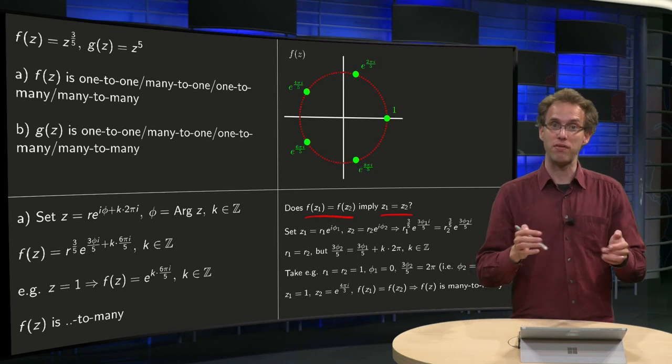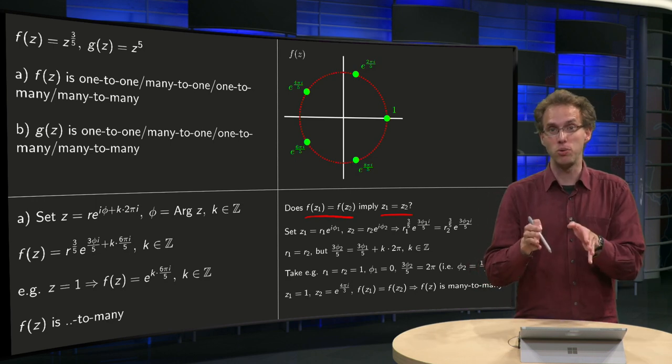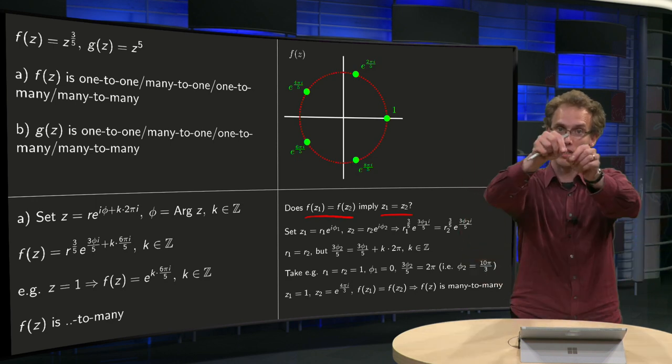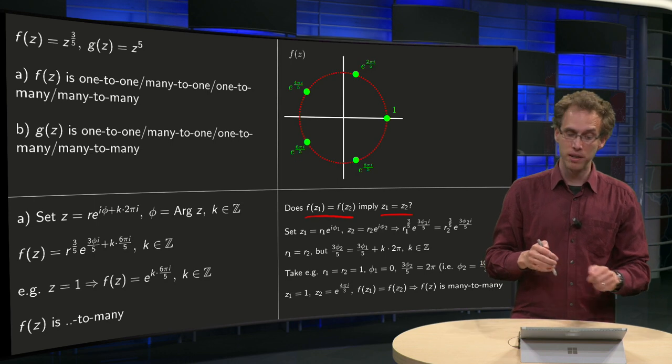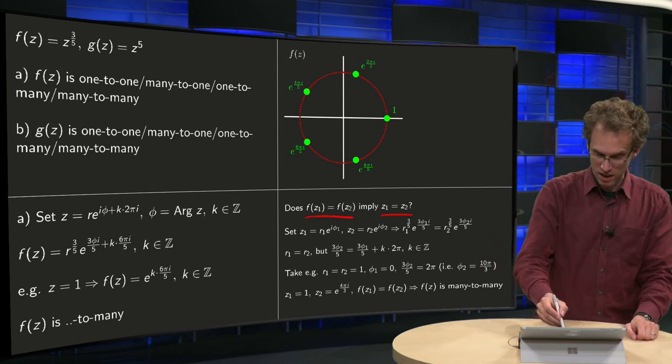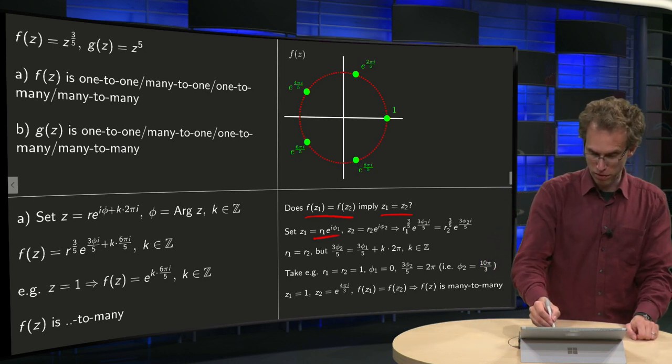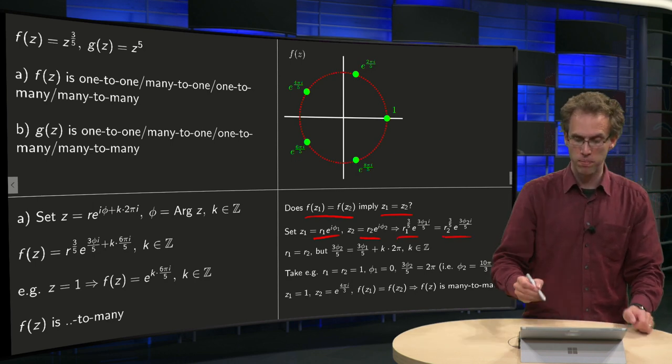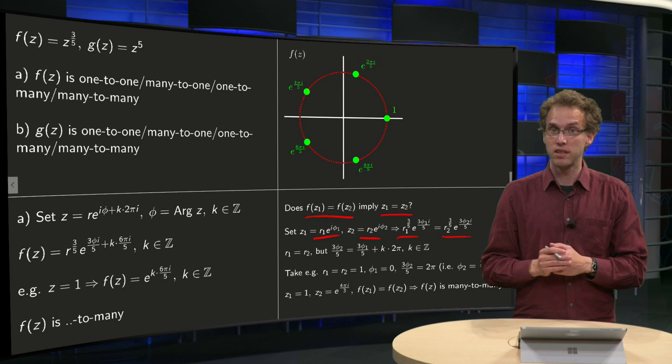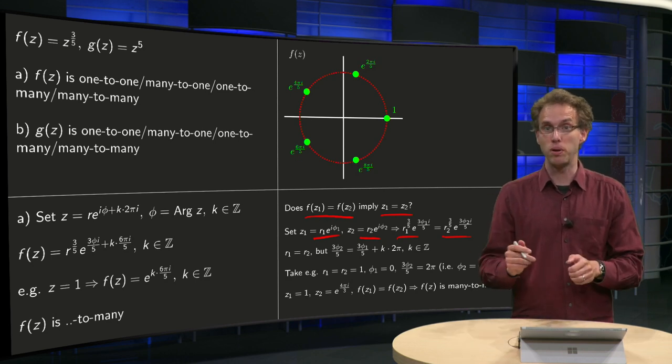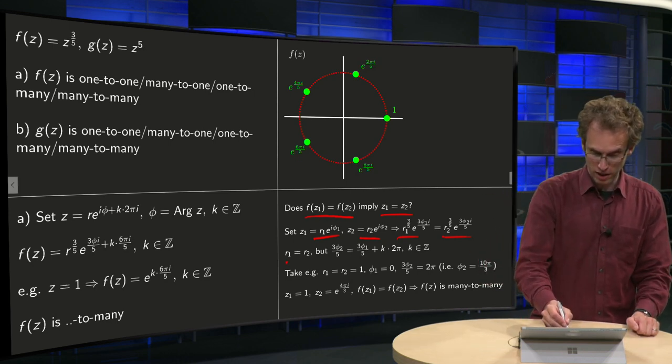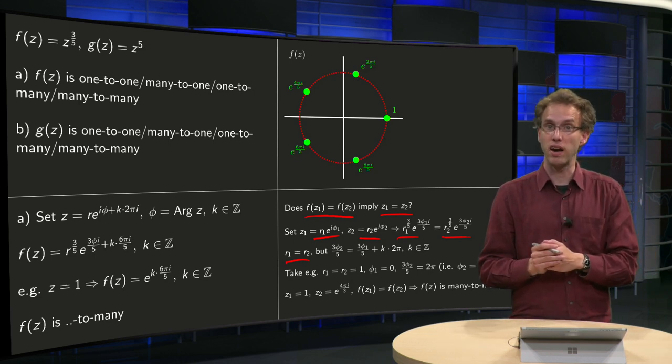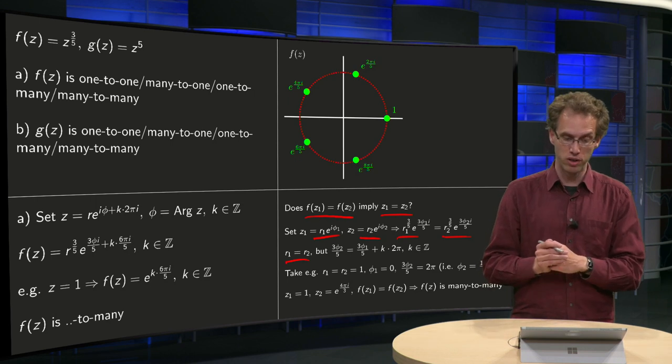Because if f of z1 equals f of z2 implies z1 equals z2, then there are not different z's mapping to the same point. Well, let's give it a try. Let's again write our z in polar form like this, and we can write our f of z in polar form. And we see that the equality f of z1 equals f of z2 implies that the radii have to be the same. r1 to the power of 3 over 5 equals r2 to the power of 3 over 5, and r1 and r2 are just real numbers.